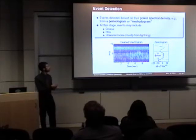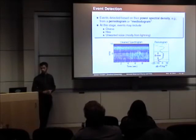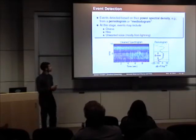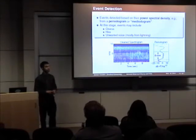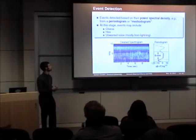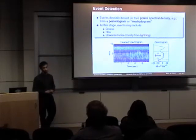Events are then detected by thresholding of the periodogram. After events are detected, they may include either the desired emissions — chorus and hiss — as well as other types of signals which for this purpose we consider unwanted noise, primarily from lightning.